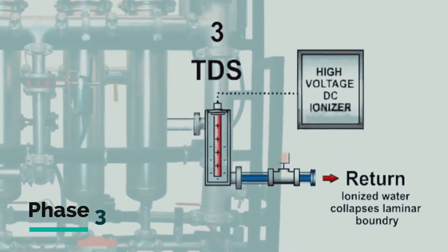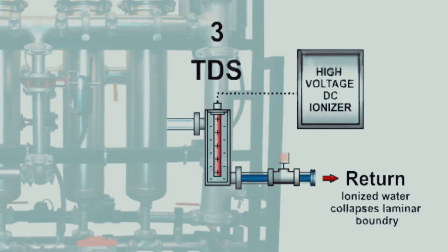Phase 3: a high-voltage positive electrode in a dielectric insulator that emits a static field. This process separates total dissolved solids and reduces water surface tension. Drag and laminar boundaries are held at a minimum throughout the loop, thereby preventing and removing scale and reducing the need for chiller tube punching.